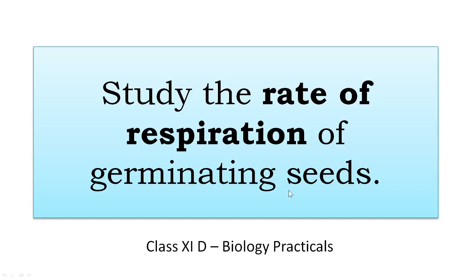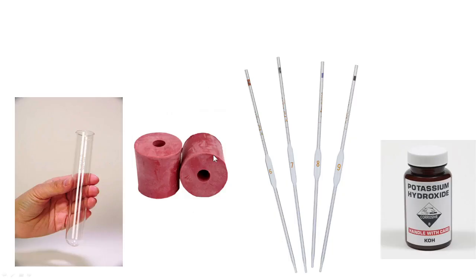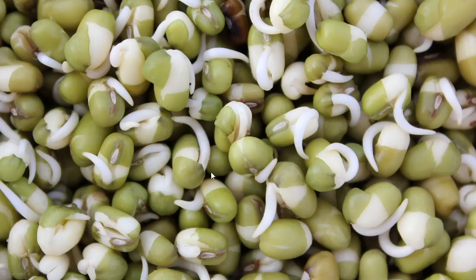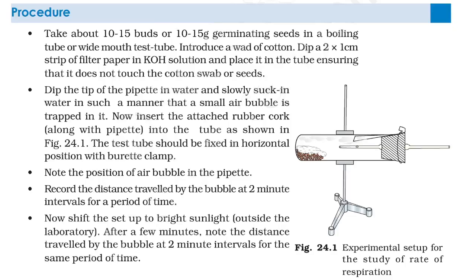To study the rate of respiration of germinating seeds, we need to perform an experiment. For this we need a boiling tube or test tube, a measuring pipette or graduated glass tube. We need germinating seeds. The procedure: take the germinating seeds, put them in the boiling tube, then add freshly prepared potassium hydroxide solution using filter paper inside the tube.